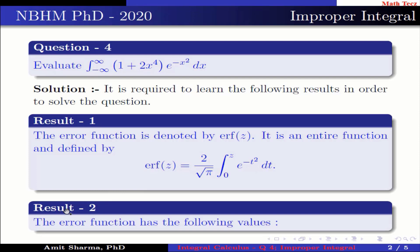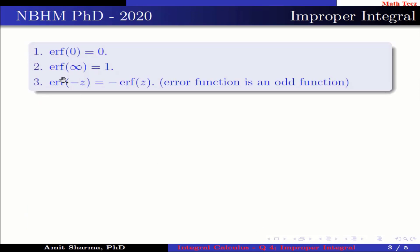Result number 2: the error function has the following values. Number 1: erf(0) = 0. Number 2: erf(∞) = 1. Number 3: erf(−z) = −erf(z). This implies the error function is an odd function.